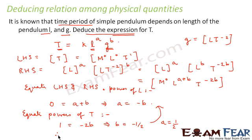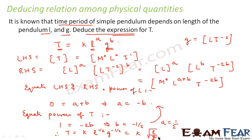Therefore, T = k·L^(1/2)·g^(−1/2), which equals k·√(L/g). We could derive this relation using dimensional analysis. The constant k cannot be determined dimensionally — it must be found experimentally.